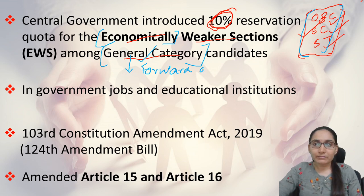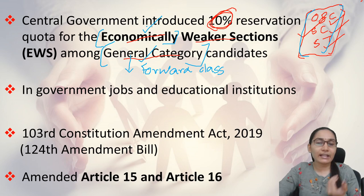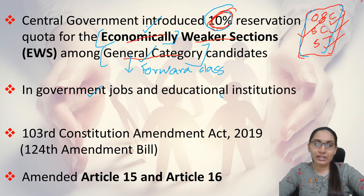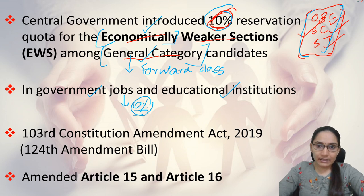Those candidates from the forward class who are economically weak — whose financial credentials are not good — will be eligible for this 10% reservation. This will be available for government jobs and in educational institutions. In government jobs, 10% of the jobs will be reserved for the EWS category, and in educational institutions, 10% of seats will be reserved for economically weaker sections.